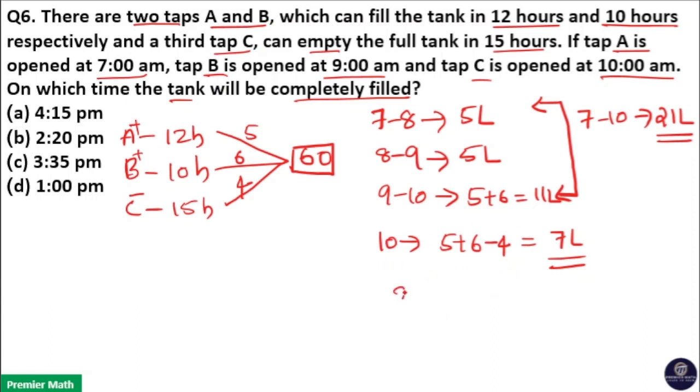Now, we have to find out the remaining. Remaining is, total is 60. 60 minus 21, which is equal to 39 liters.